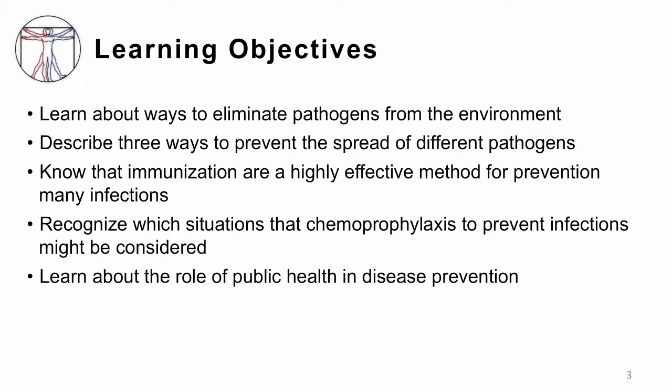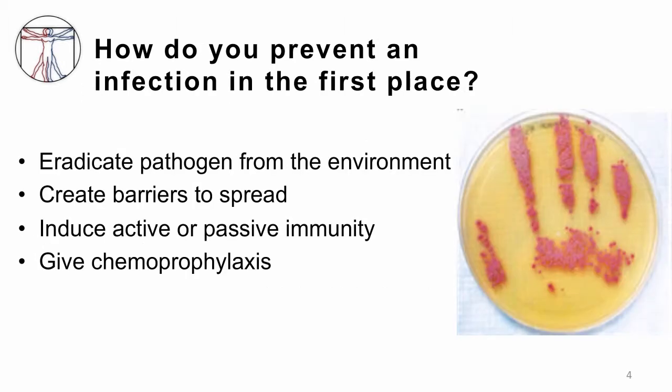Our learning objectives for today are: one, to learn about ways to eliminate pathogens from the environment; two, to be able to describe three ways to prevent the spread of different pathogens; three, know that immunizations are a highly effective method for prevention of many infections; four, recognize which situations chemoprophylaxis might be useful to prevent infections; and lastly, learn about the role of public health departments in disease prevention.